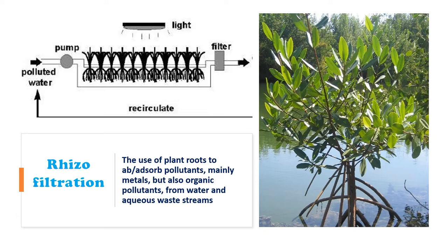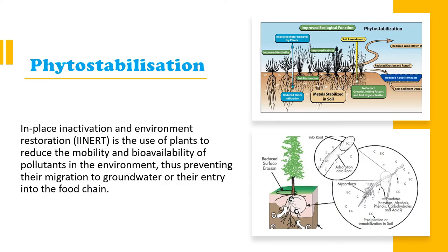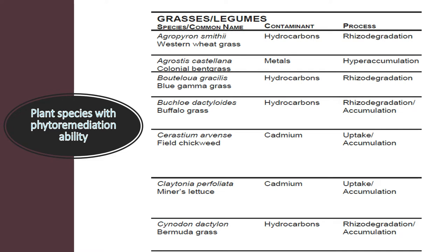Phytostabilization, also called in-place inactivation, uses plants to reduce the mobility and availability of pollutants in the soil and environment, preventing their migration to groundwater and entry into the food chain. Pollutants that would otherwise be available for root absorption are stabilized so they cannot be absorbed into the food chain or leached into groundwater.